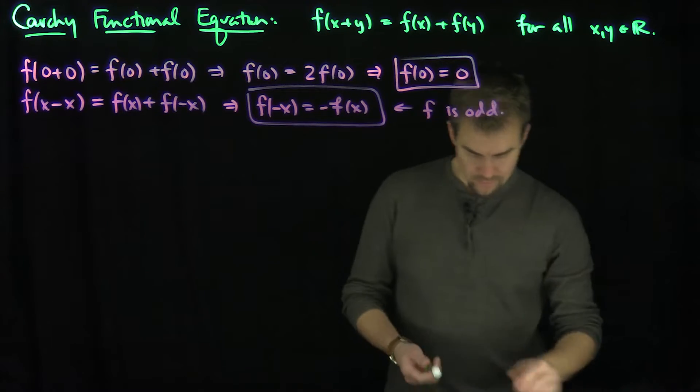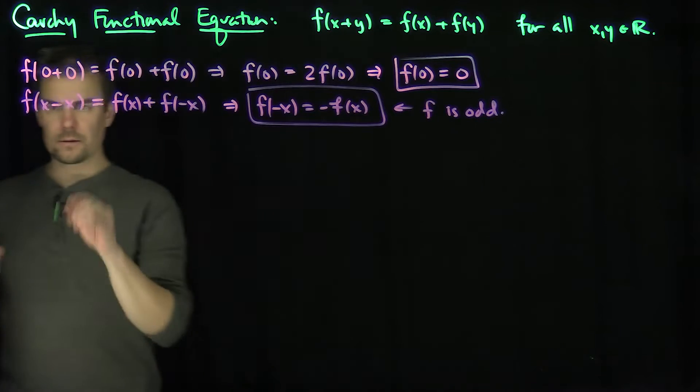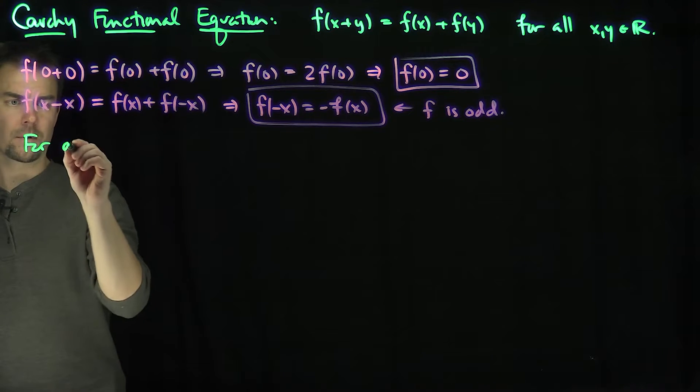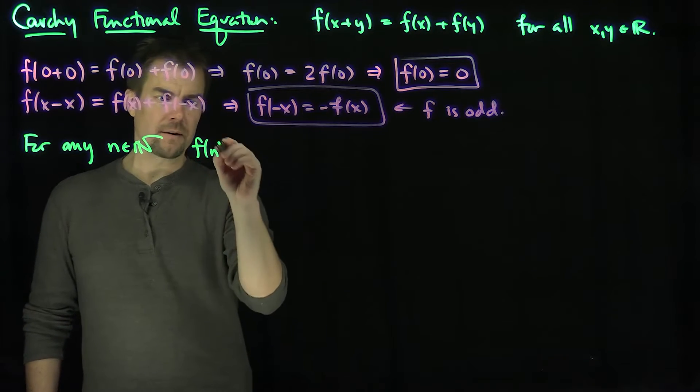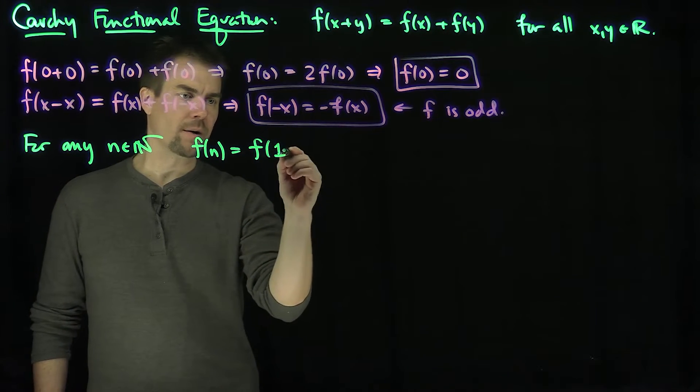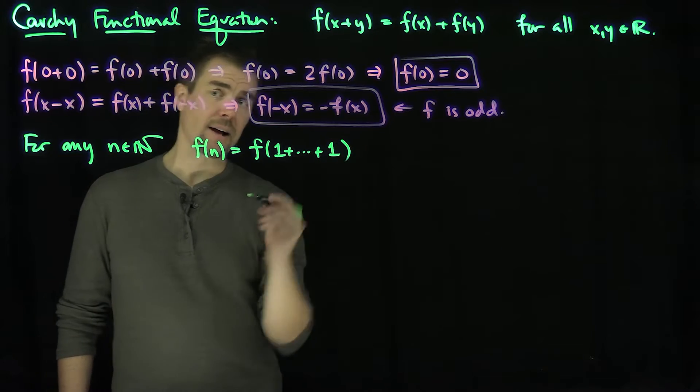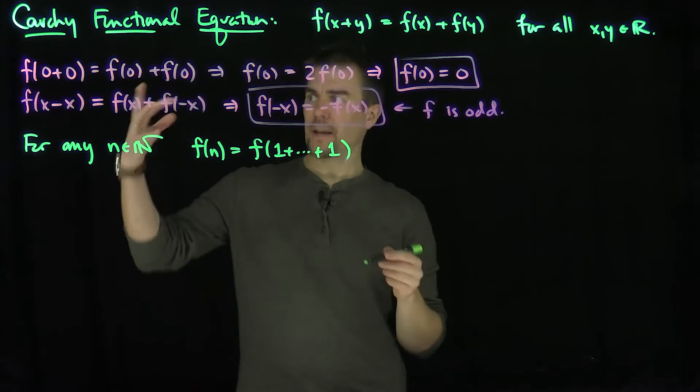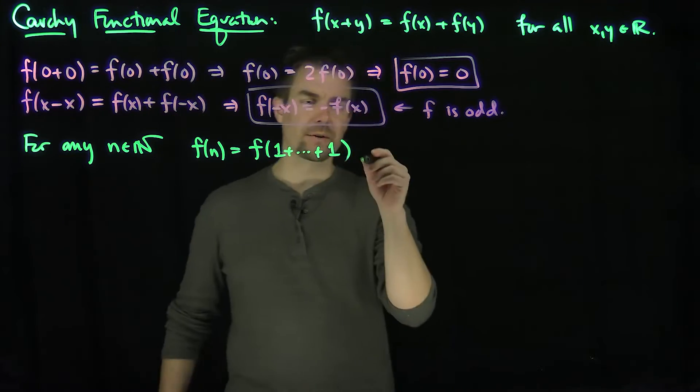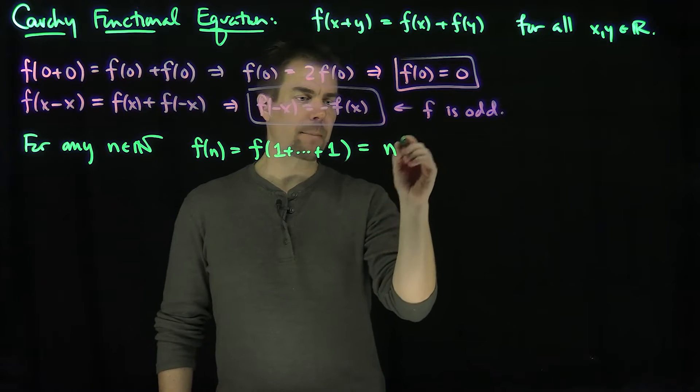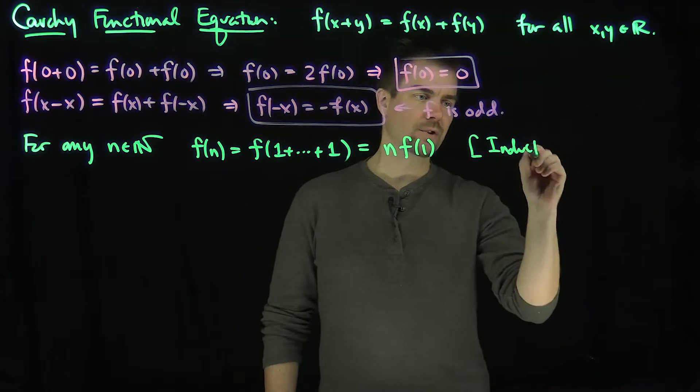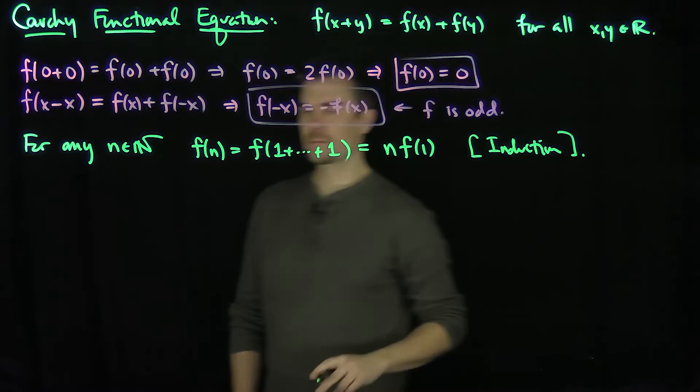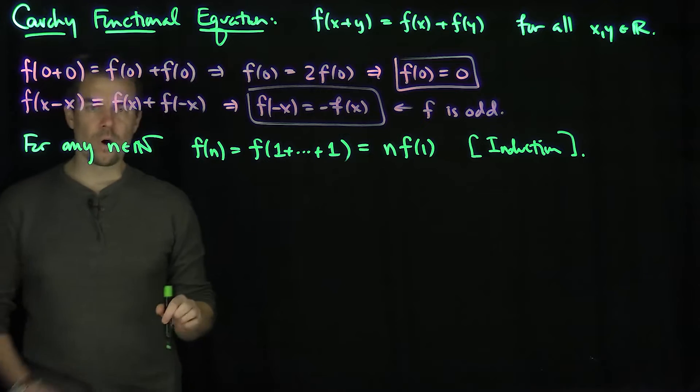The next thing I'd like to observe is that for any n in N, we can look at f(n), which is f(1+1+...+1) n times. So there's n ones over here. So iteratively, or by induction, I can show there's going to be n copies of f(1). We can prove this by induction easily. It's a trivial proof. So it's n times f(1).